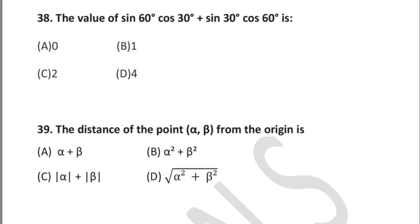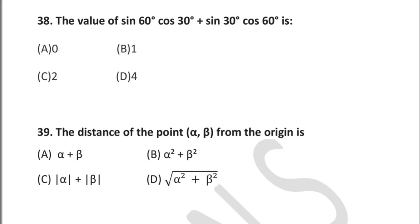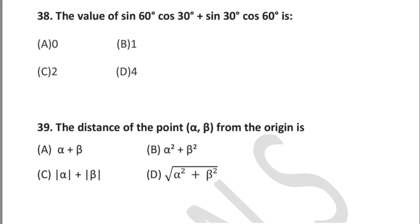Question 38: the value of sin 60° · cos 30° + sin 30° · cos 60° is — option A: 0, option B: 1, option C: 2, option D: 4. Question 39: the distance of a point (α, β) from the origin is — option A: α + β, option B: α² + β², option C: |α| + |β|, option D: √(α² + β²).